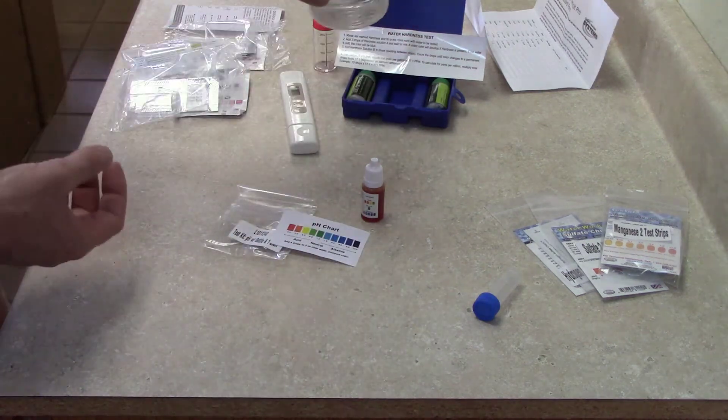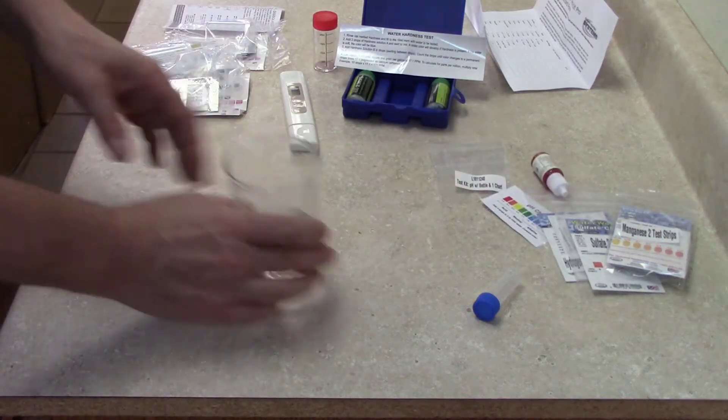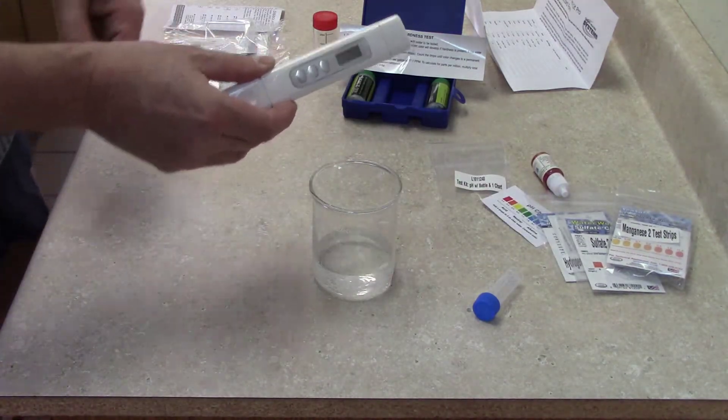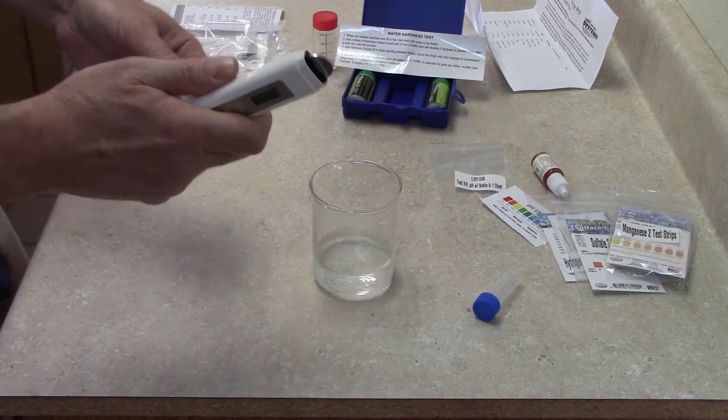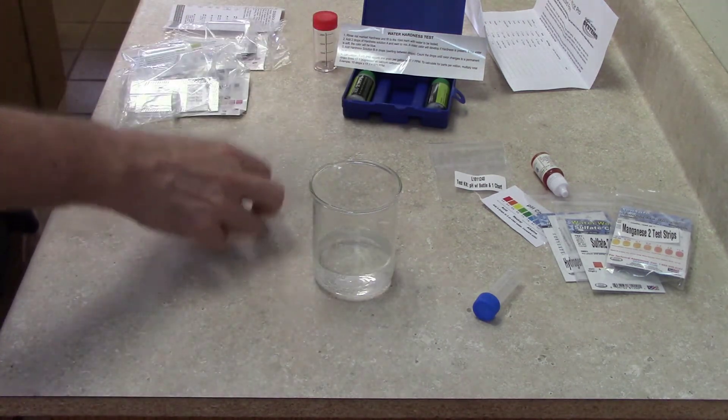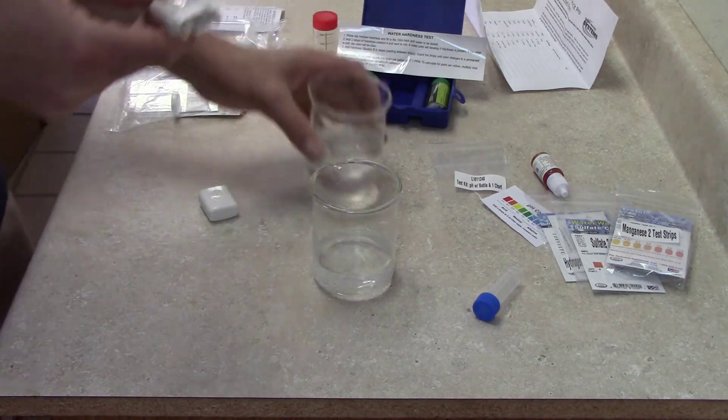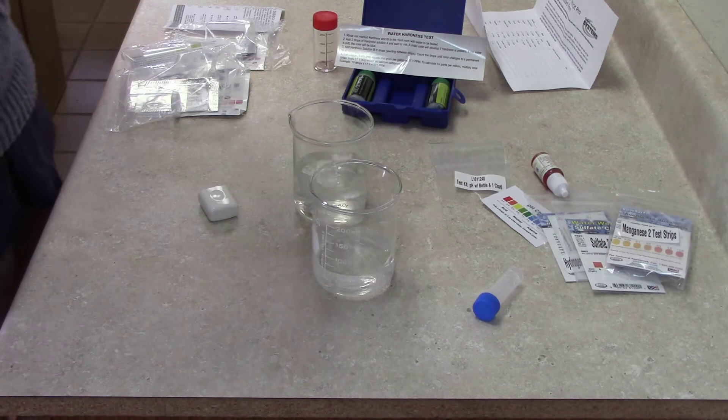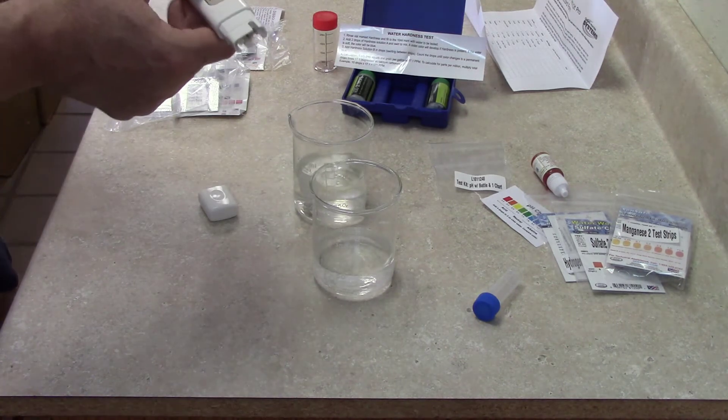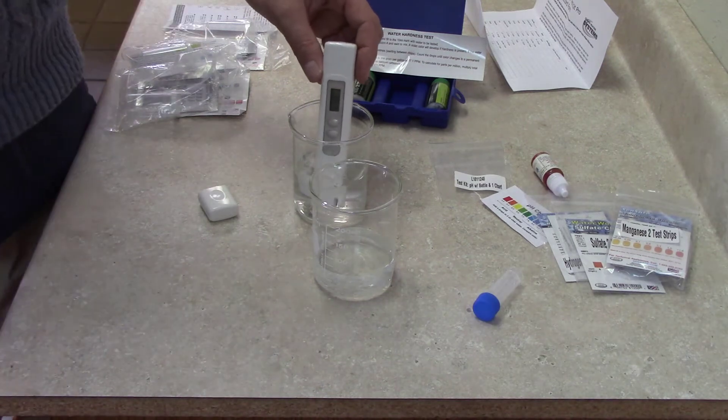The last thing we have in the test kit is the TDS meter. On one side when you open it, that's where the battery goes. On the other side is the probe that you'll stick into the water. It measures temperature and TDS - total dissolved solids, a measure of salts in the water. You turn it on and put it in the water to find out the TDS or temperature.